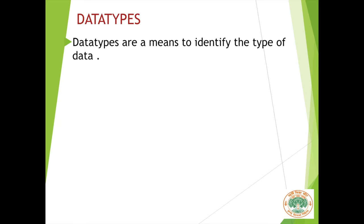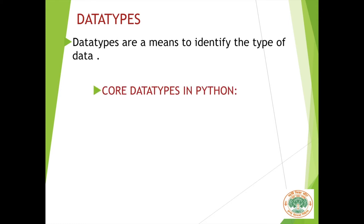What is a data type? Data types are a means to identify the type of data. In Python we can deal with different types of data like integers, strings, floats, complex numbers, lists, tuples, etc. Just by looking at the syntax or the rules we can say what type of data these are. Let us see the core data types available in Python.